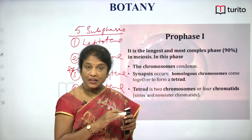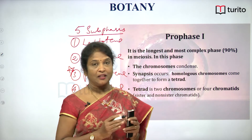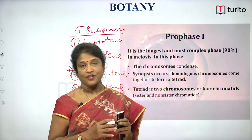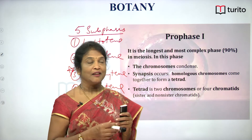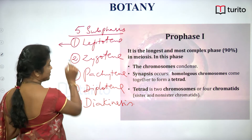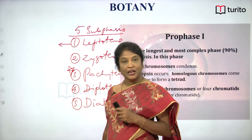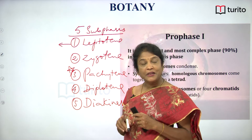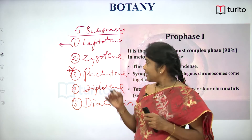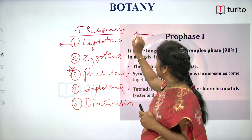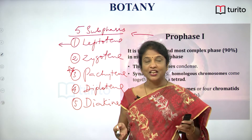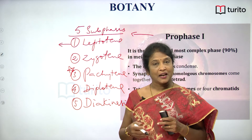But what happens during these five sub-phases? Prophase one is very lengthy with many sequential complex events, categorized into five sub-phases. In the previous class we followed that during leptotene stage, the chromatin reticulum breaks into a specific number of threads, representing early prophase. Chromosomes are initially elongated, thread-like, and start condensation and spiralization.